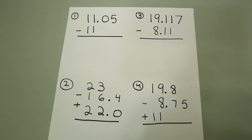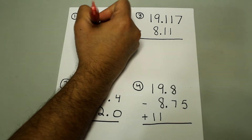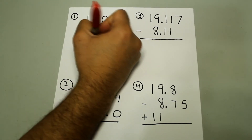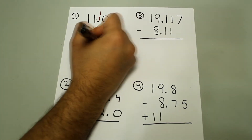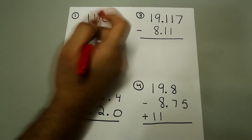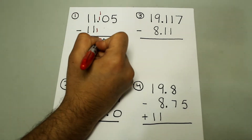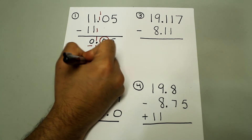If we're subtracting, we do the exact same thing. So first we have 11.05 minus 11. Just like before, we go with the least number of decimal places. 11 doesn't have any decimal places, so the final answer won't have any decimal places. We draw a dashed line right after this 1 and subtract straight down. We're rounding to the nearest whole number. Since 0 is less than 5, we are rounding down, and the final answer is going to be 0.